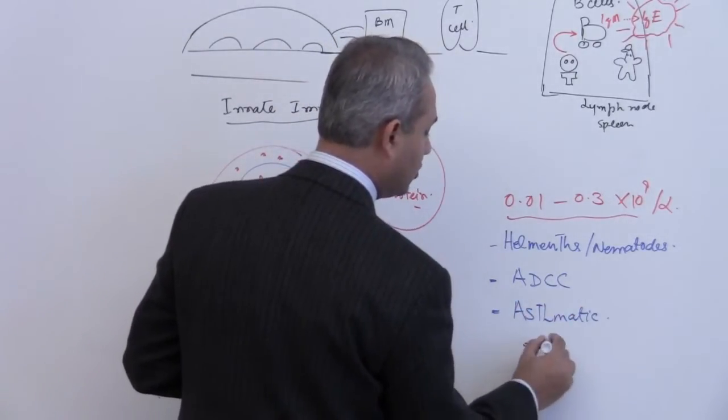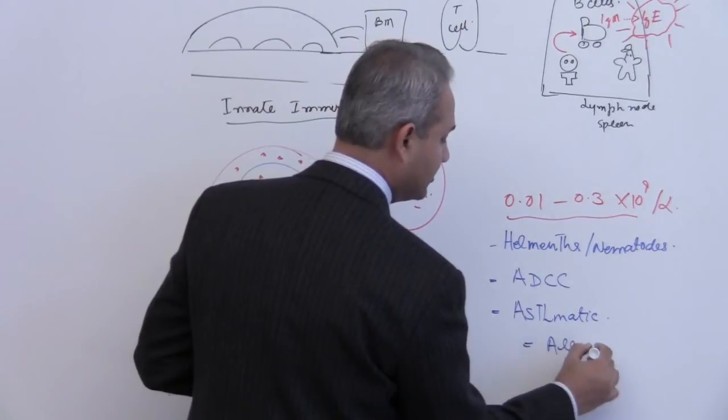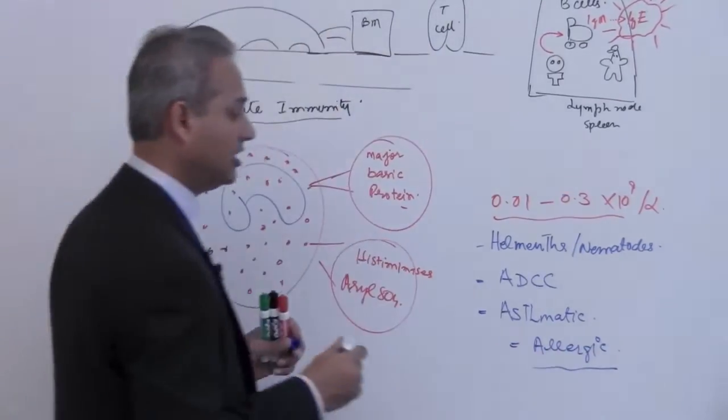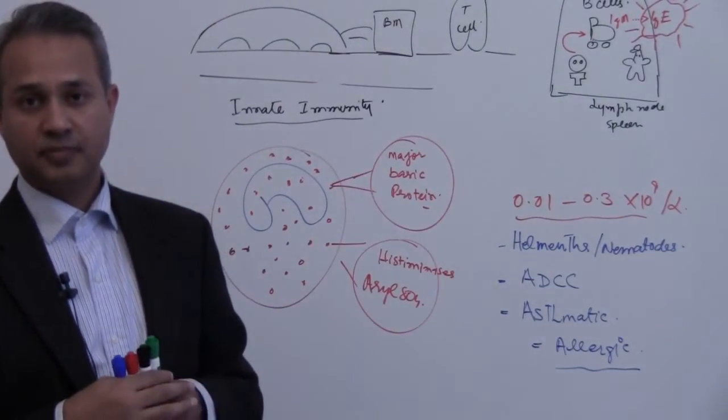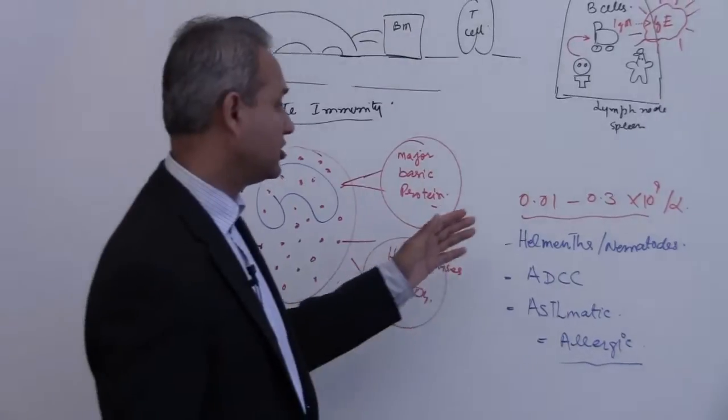And of course we know, we just did the basophils and mast cells. We should know the participation of the eosinophils in allergic reactions. So these three, four things should be known.